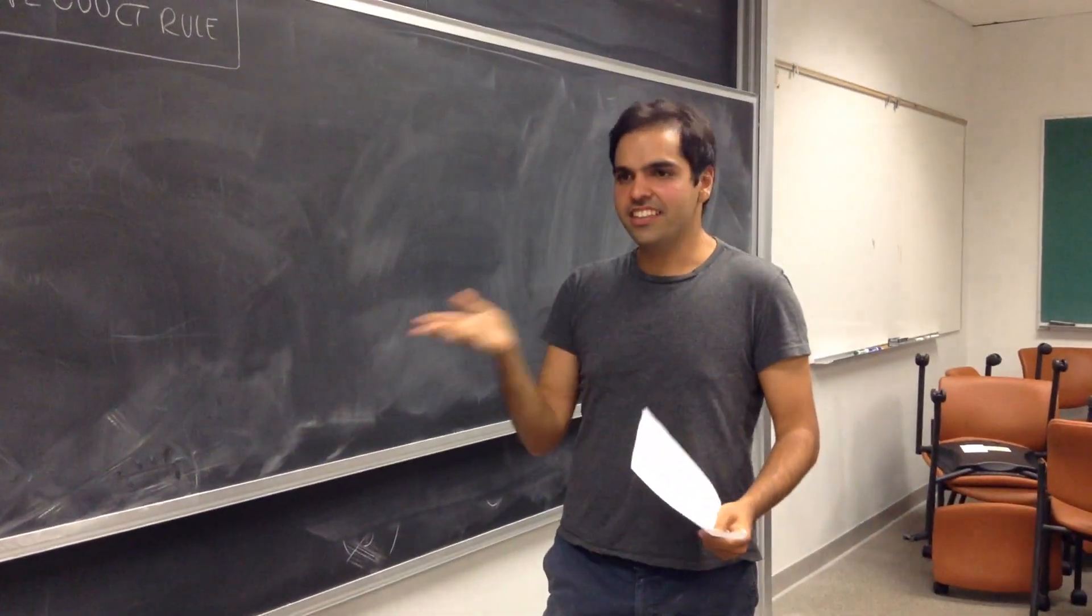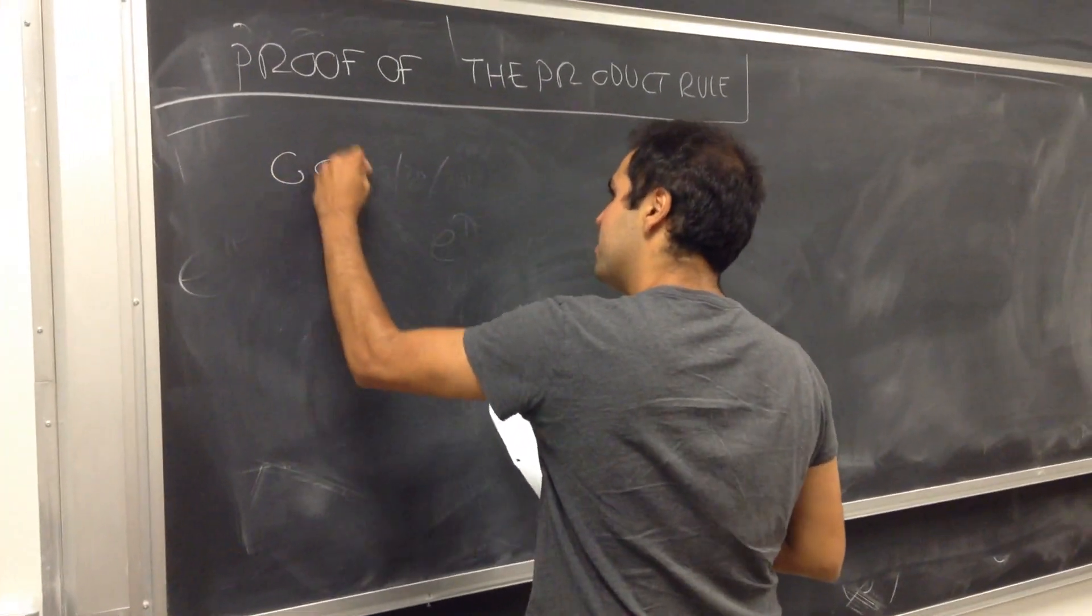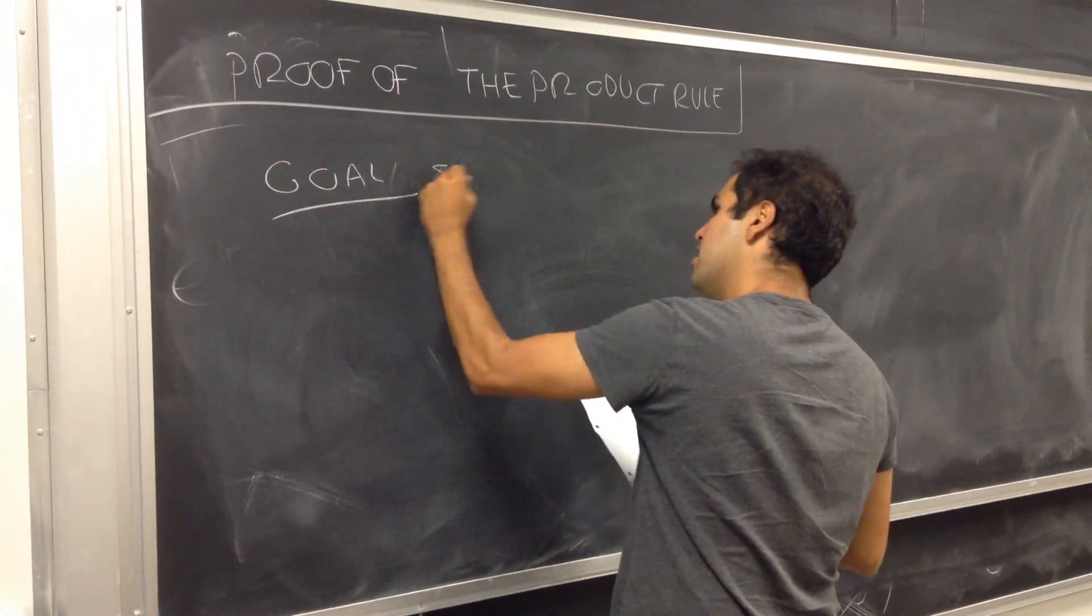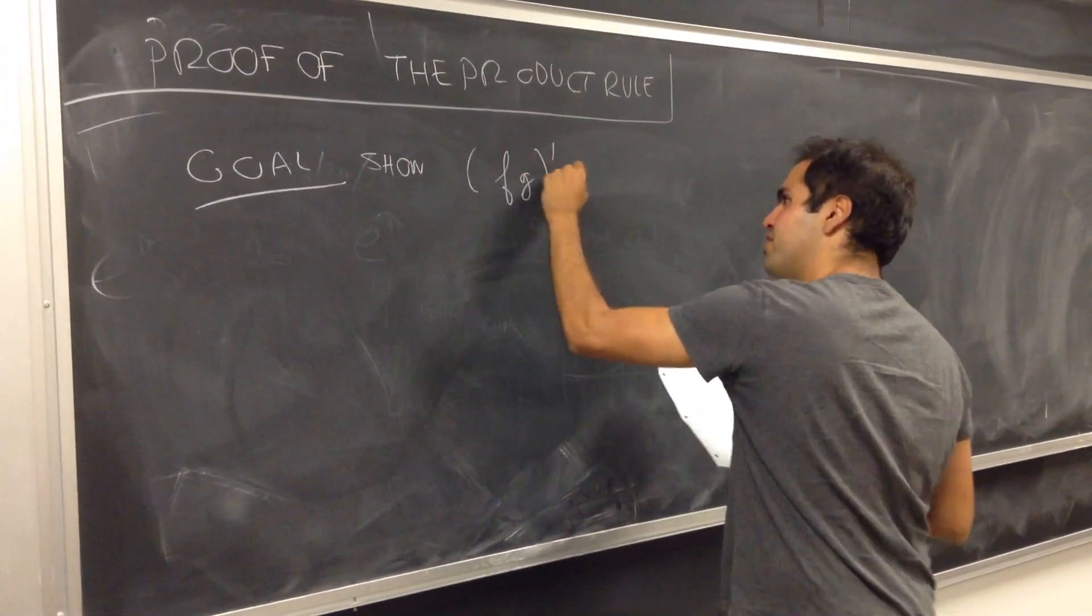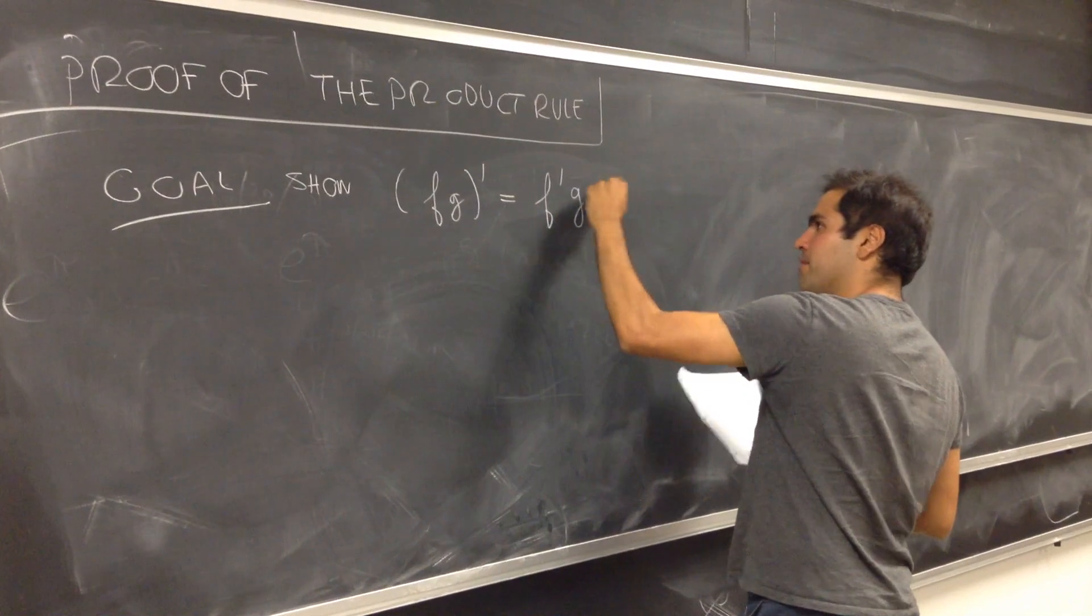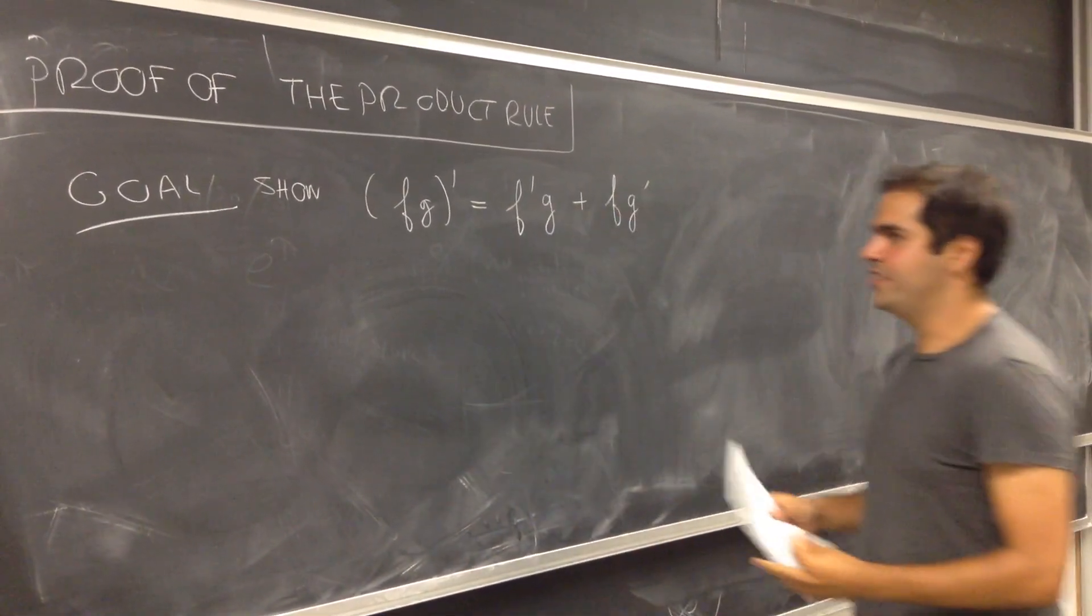And it's actually a very, very elegant proof. You'll see. So our goal is to show that the derivative of f times g is the derivative of f times g plus f times the derivative of g.